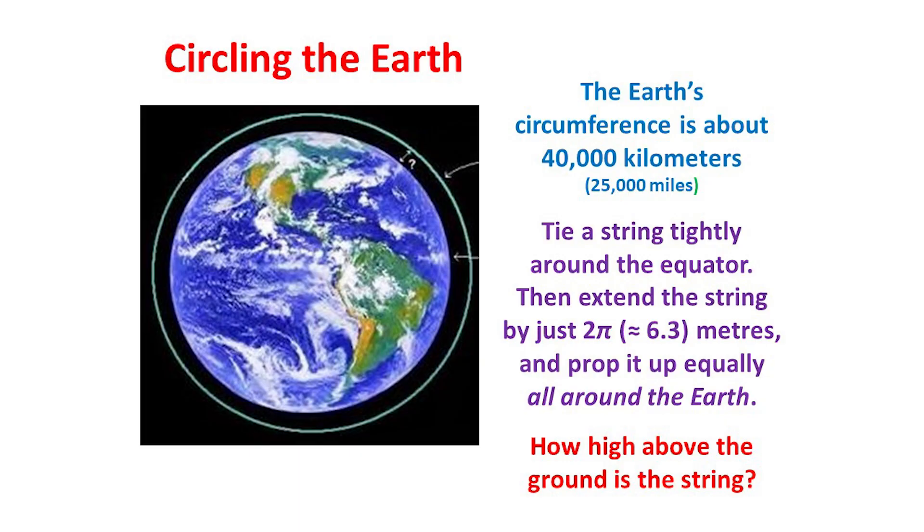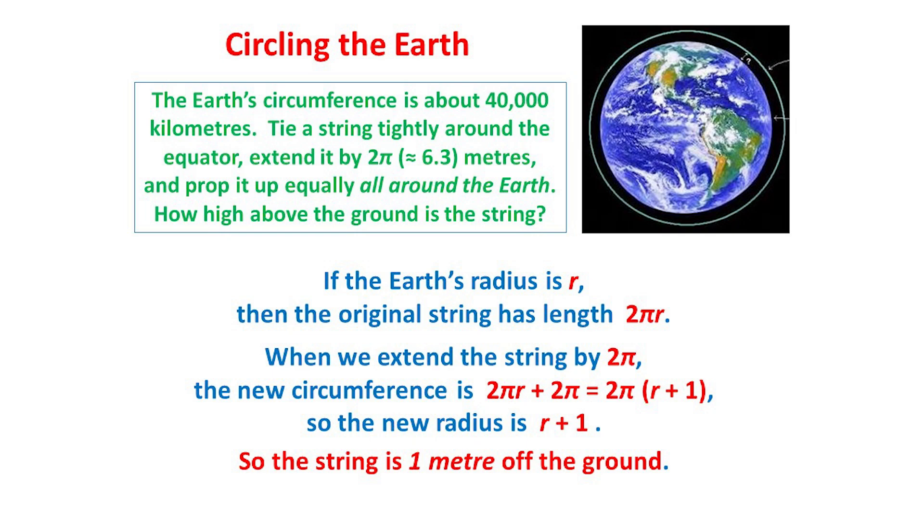The resulting gap must surely be extremely small. Let's find out. If the Earth's radius is r metres, then the original string has length 2πr. When we extend it by 2π metres, the new circumference is 2πr plus 2π, which is 2π times (r + 1). So the new radius is r plus 1, which is 1 metre more than before. So the string is a whole metre off the ground.